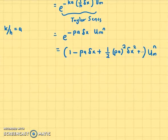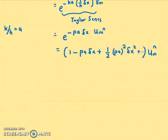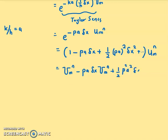Now, continuing our equation here where we just multiply the u_m^n inside, we have u_m^n minus ρa delta x u_m^n, plus half ρ squared a squared delta x squared u_m^n. There are some terms, but we are not going to consider the expansion of Taylor series up to that term. This is what we are going to consider.